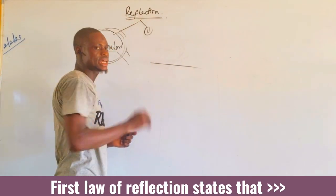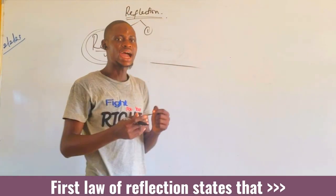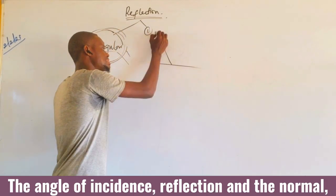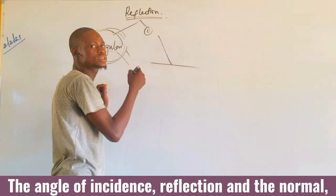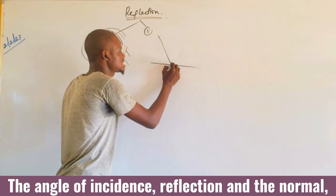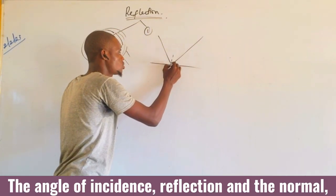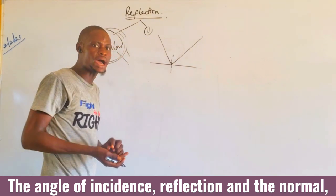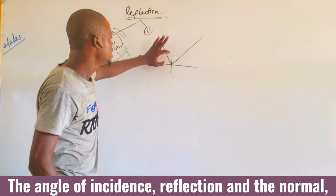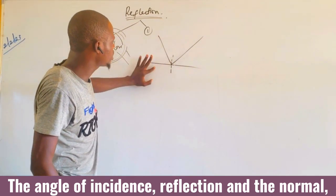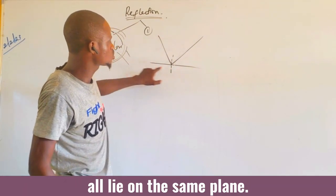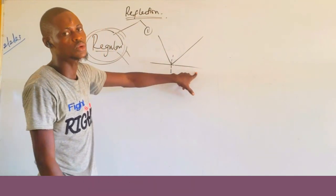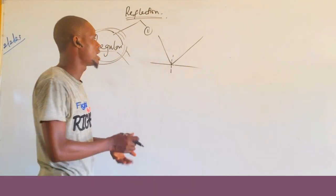The first law talks about the angle of incidence. This line here is what we call the normal. A normal is a line that is perpendicular to the smooth surface. A line perpendicular to the surface is known as the normal.